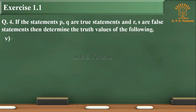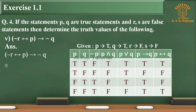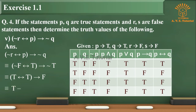Sub-question 5: (negation of R biconditional P) implies negation of Q. Answer: Given P is true, Q is true, R is false, S is false. This is equivalent to (negation of F biconditional T) implies negation of T, which is equivalent to (T biconditional T) implies F, which is equivalent to T implies F, which is equivalent to F.